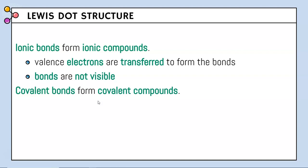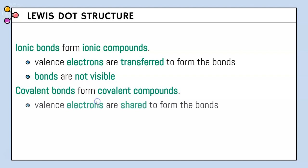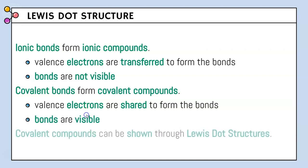Covalent bonds form covalent compounds because the valence electrons are shared to form these bonds. As a result, the bonds will be visible in a compound. And covalent compounds can be shown through Lewis Dot structures.